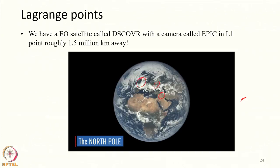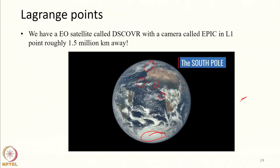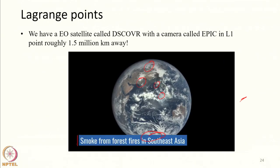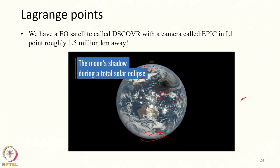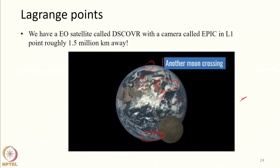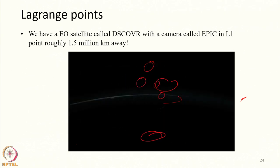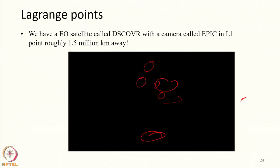The north pole here, this is the south pole, this is smoke traveling, and this is a moon shadow. These are like another moon crossing. Basically this is an example to illustrate the application of observations from the L1 point. The satellite placed there is mainly for climate applications in order to observe the earth as a whole.